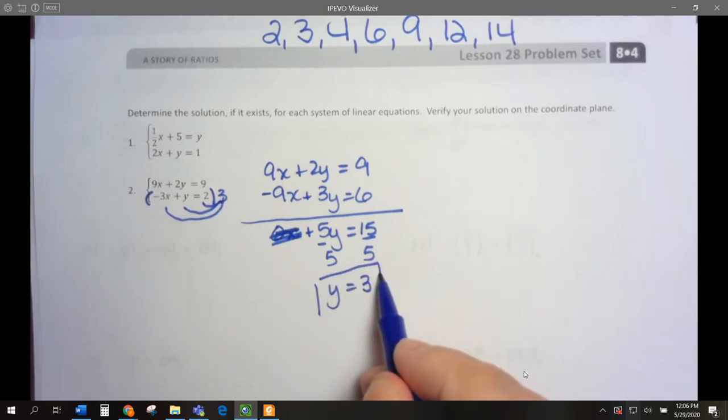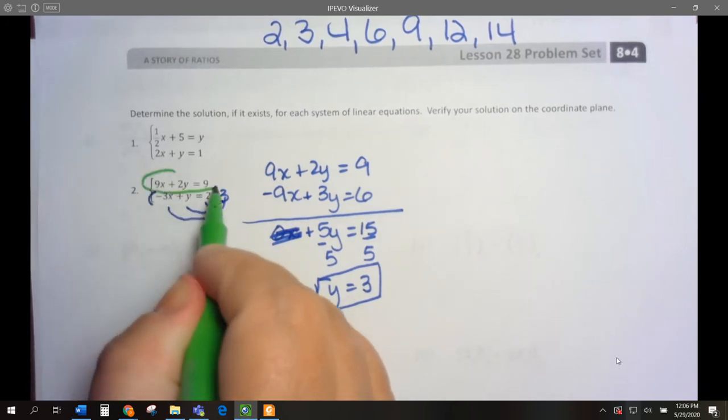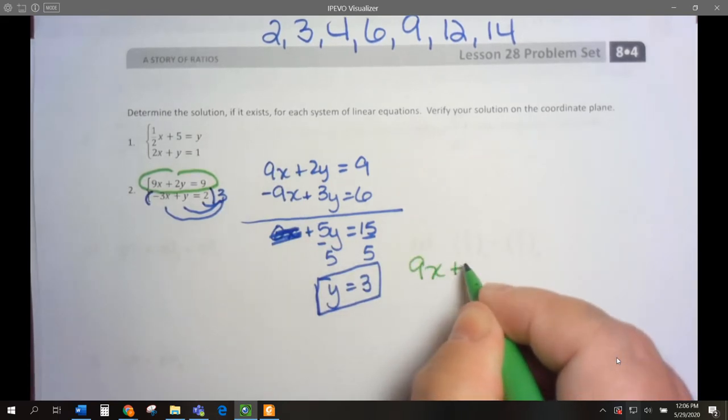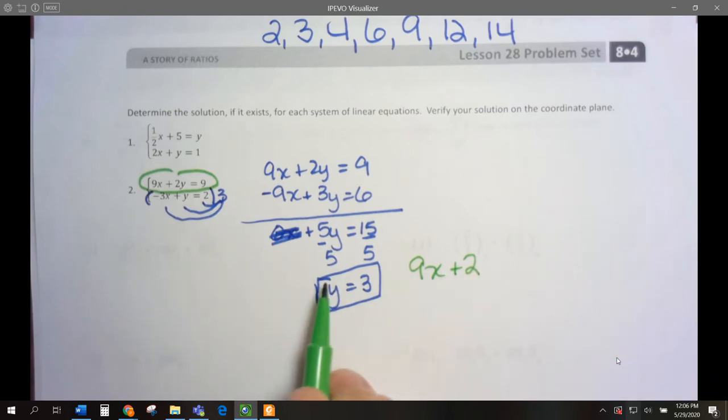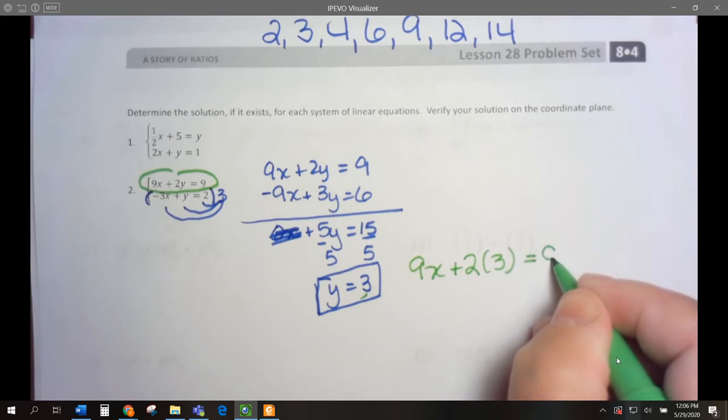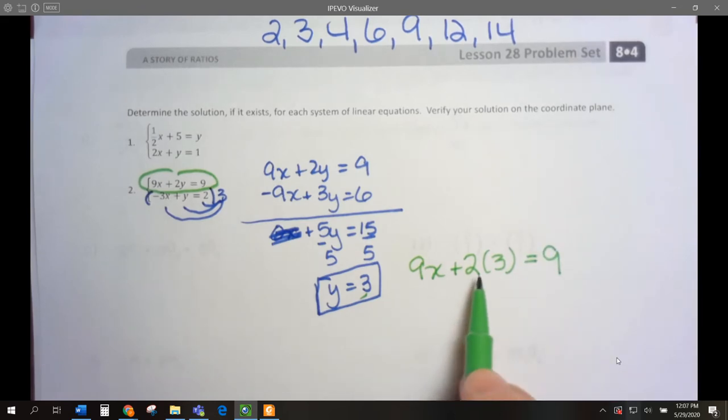So I know that y is 3. Now I can take that 3 and put it into one of the equations. Let's take this equation here. We have 9x plus 2y, but y is 3. So 2 times 3 equals 9. We have 9x plus 6 equals 9.